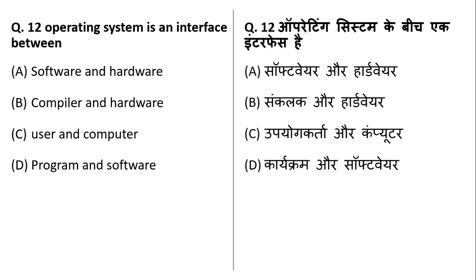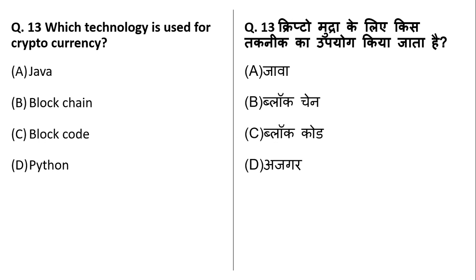The operating system is an interface between a user and a computer. Interface means a middleman. If you want to perform a calculation on the computer, the operating system comes in between — system softwares are built on the operating system platform. So the operating system becomes the interface between a user and a computer.